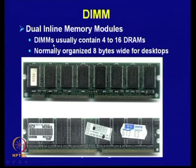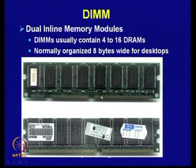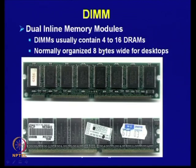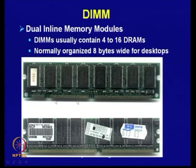DIMMs usually contain 4 to 16 DRAMs. For example, a 4×1 DRAM chip provides 4×64 kilobytes. With 8 such chips, you get a 32-bit wide bus — 8×4 = 32-bit. These DIMMs are used for realizing main memory in desktops, servers, and workstations. Each DRAM provides 4 bits, and 4 to 16 DRAMs on a single PCB provide an 8-bytes-wide bus.